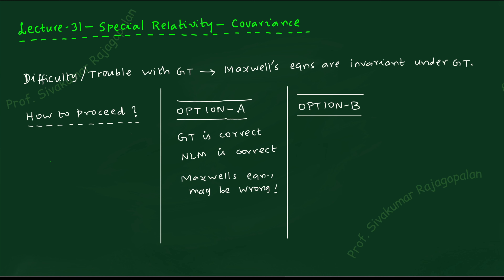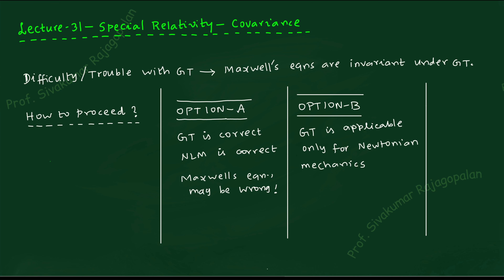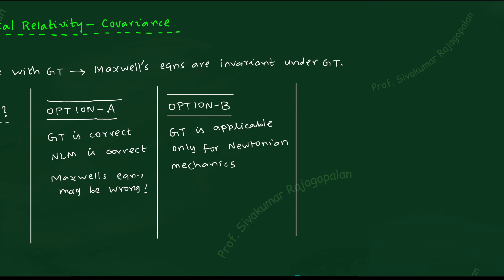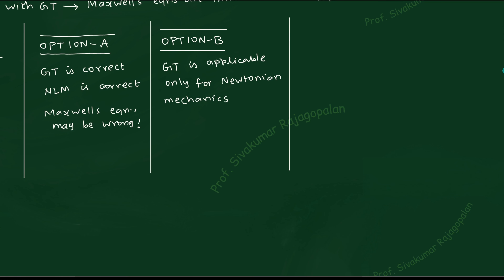It is a kind of finding the culprit — on whom are you going to throw the blame for the loss of invariance? So Option A: Galilean transformation is correct, and Maxwell's equation is wrong. The second option is that the Galilean transformation is fine but applicable only for Newtonian mechanics. You can make a statement like that and then try to manage the situation. Option B: Galilean transformation is applicable only for Newtonian mechanics, not for Maxwell's equations.